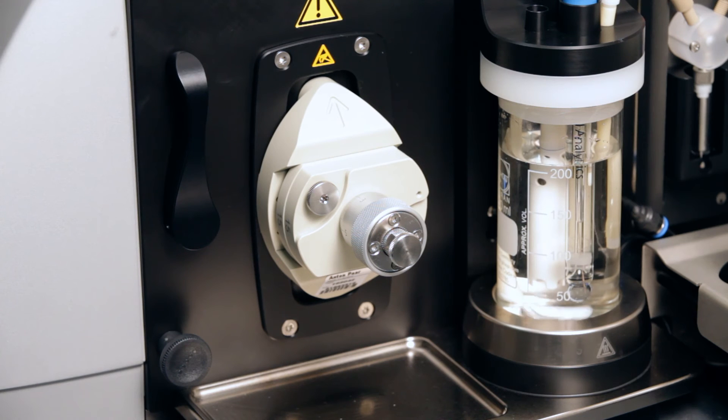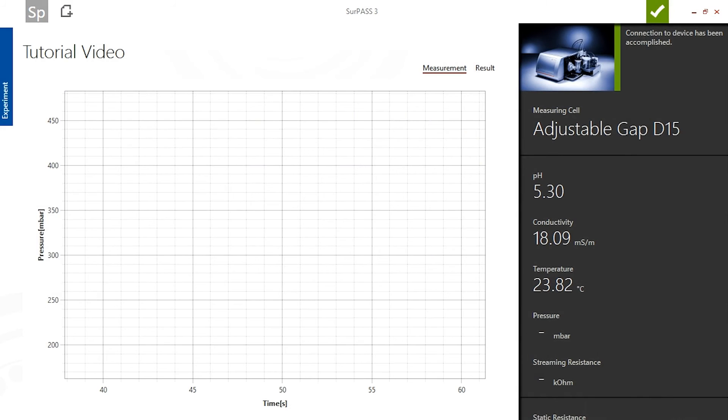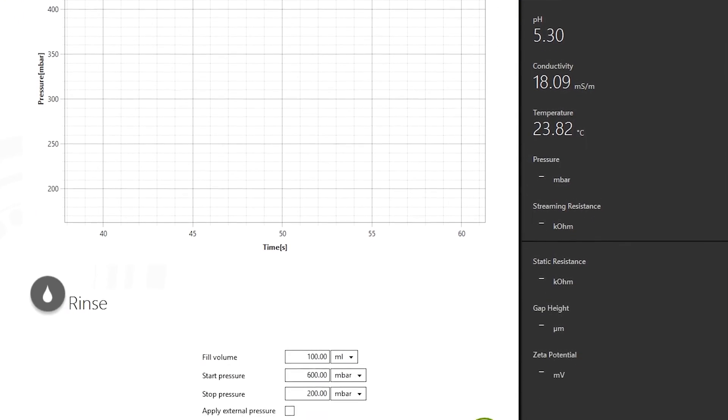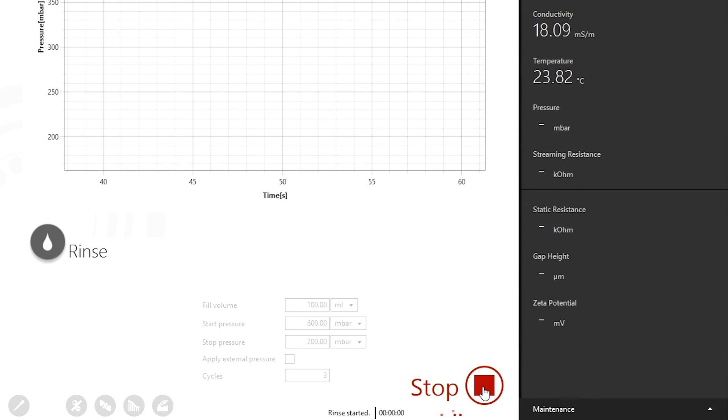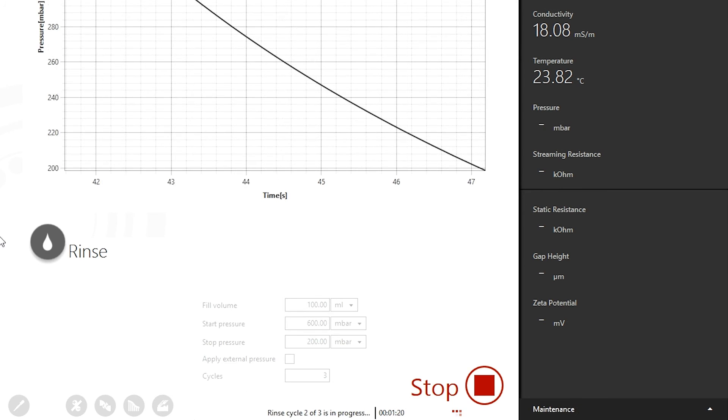The adjustable gap cell for discs is then recognized by the Surpass 3 software. Use the rinse cycle to adjust the gap between the sample surfaces while filling the cell with measuring liquid.